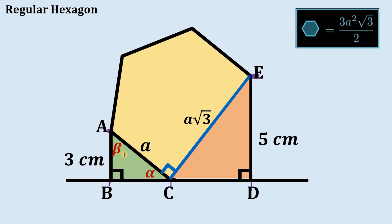We call angle BAC as beta. Note that alpha plus beta equals 90 degrees. The whole angle is 180 degrees — a straight angle. We have 90 degrees and alpha, so the other angle equals beta. Since this is also a right triangle, angle CED is also alpha. Therefore, triangle ABC is similar to triangle CDE.